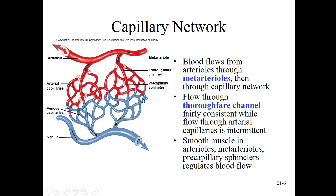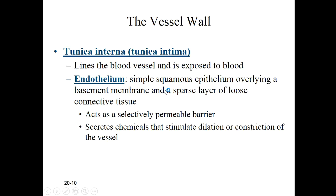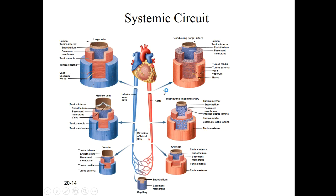Looking at the structure of the arteriole, we can see it has a small amount of muscular tissue, a relatively thick adventitia, and endothelium with a basement membrane. Getting into the capillaries, we find none of those other peripheral tissues — it's only endothelium and basement membrane, because capillaries are the only vessels permeable enough to allow gaseous and nutrient exchange.